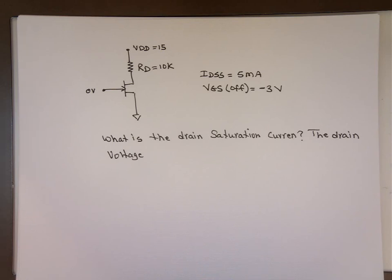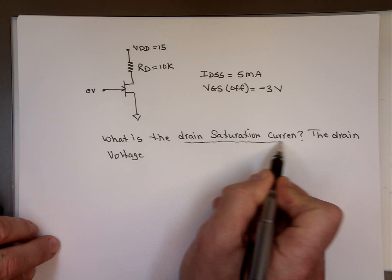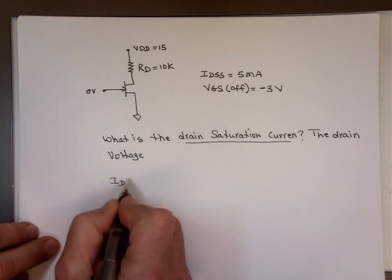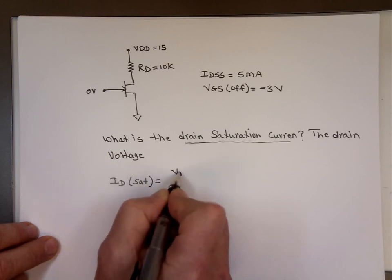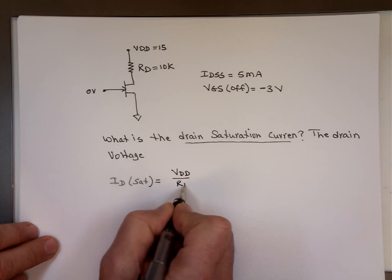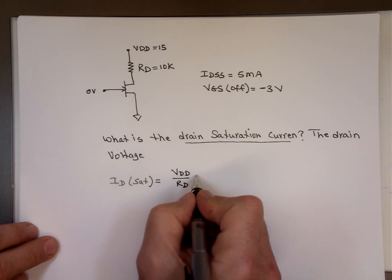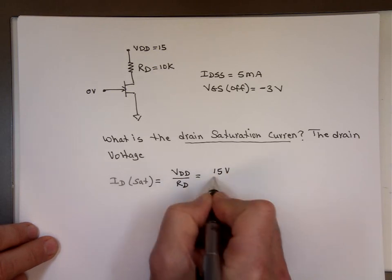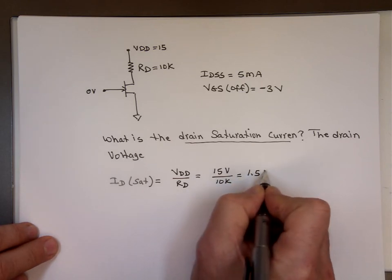Let's take this example. Given that simple circuit, what is the drain saturation current and the drain voltage? Anytime you hear the drain saturation current, the solution to that is always going to be VDD over RD. That's this voltage divided by that resistor. This voltage is 15 volts, the resistor is 10K, and the answer is 1.5 milliamp.